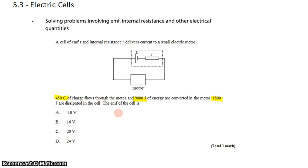We want to use this information to find the EMF of the cell. Well, if 450 coulombs of charge are delivered to the motor, they must have gone through the internal resistance as well. You can't go through here without going through there. There's only one path. So the 450 coulombs pass through both devices.